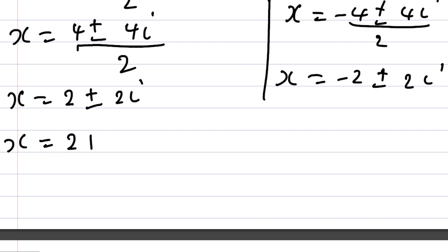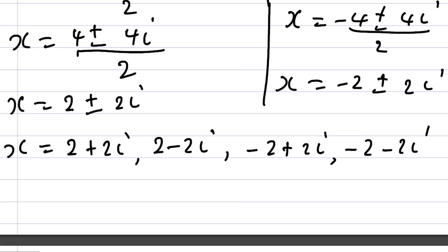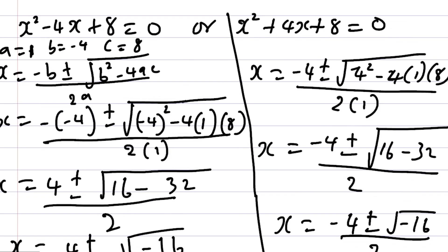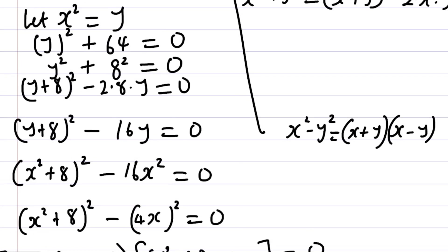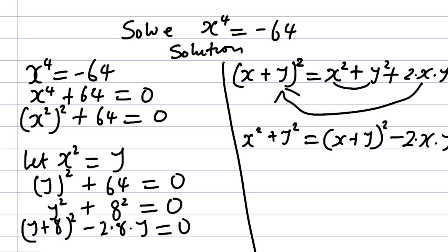The final four answers are: X equals 2 plus 2i, X equals 2 minus 2i, X equals minus 2 plus 2i, and X equals minus 2 minus 2i. We have four answers because the polynomial has degree 4 — the power is 4. Thank you very much for watching. Please don't forget to subscribe and share with your friends.